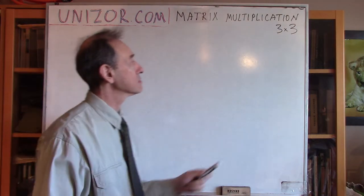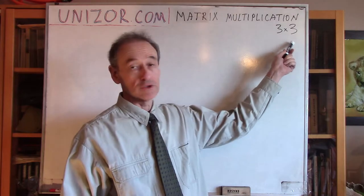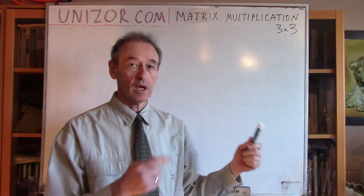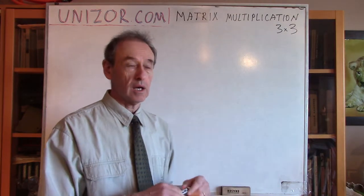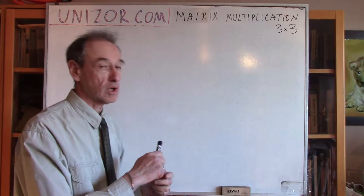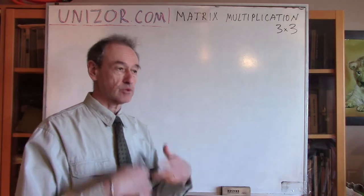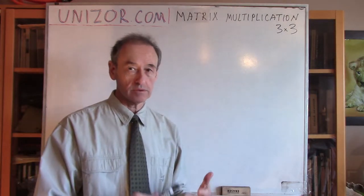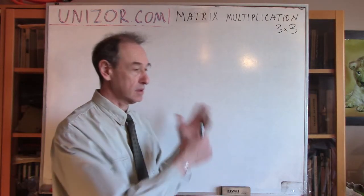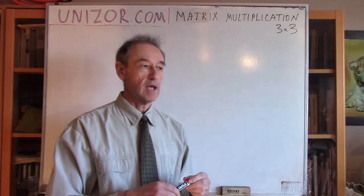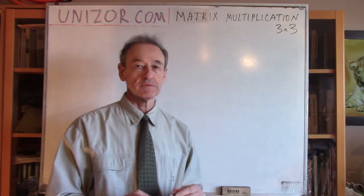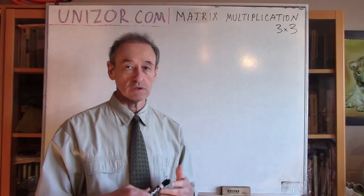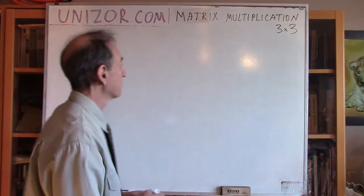In the previous lecture I was talking about 2 by 2 matrices and their multiplication. Today I will talk about 3 by 3, and I would like to come up with the same result — generally speaking — which I will explain right now, and that would be the foundation for a definition in the common case.